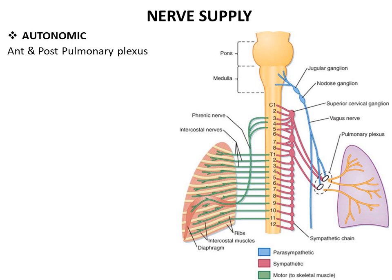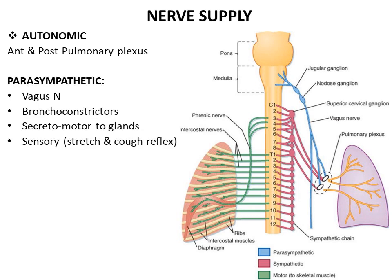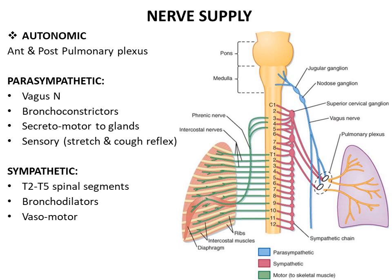The nerve supply to the lungs is mainly autonomic; both sympathetic and parasympathetic nerves form the anterior and posterior pulmonary plexus. The parasympathetic supply is through the vagus nerve — it is stimulatory to the bronchial muscles causing bronchoconstriction, increases secretion from the glands (secretomotor), and most sensory fibers travel through the vagus, responsible for the stretch and cough reflex. Sympathetic supply is through the T2 to T5 spinal segments; these are inhibitory to the bronchial muscles, causing bronchodilatation, and also supply the smooth muscle in the walls of blood vessels as sympathetic vasomotor fibers.